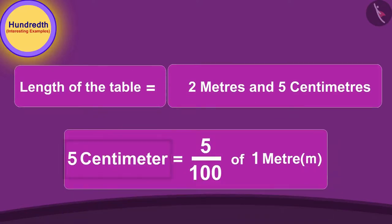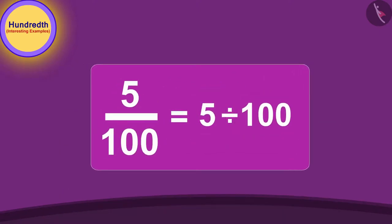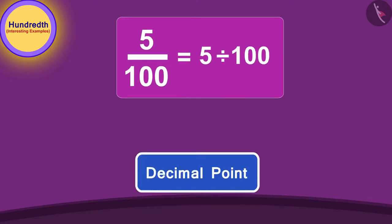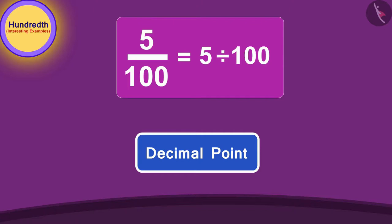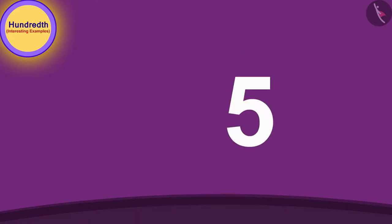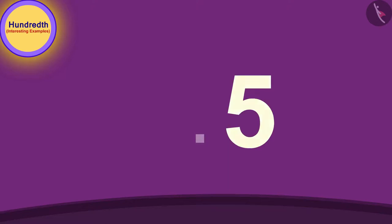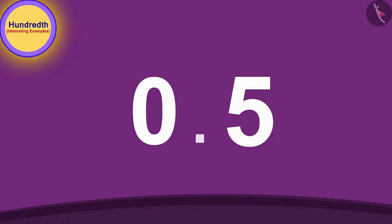Five centimeters is the five hundredth part of a meter — in other words, we are dividing five by one hundred. To write it using the decimal point, we will move the decimal point to the left once, starting from the end of five. Then, because five is made up of only one digit, we will once again move the decimal point to the left by adding a zero to the left of five.